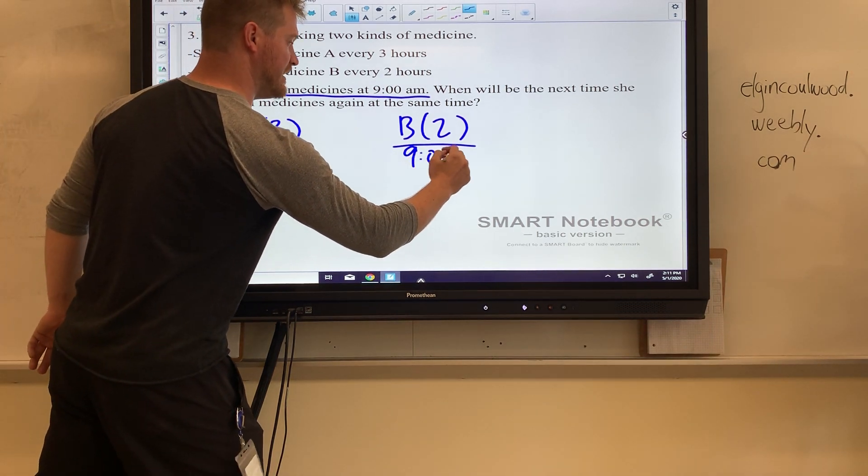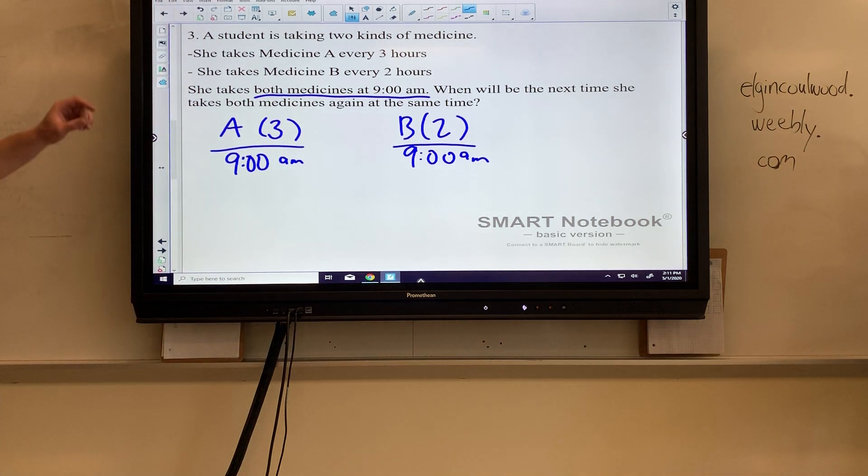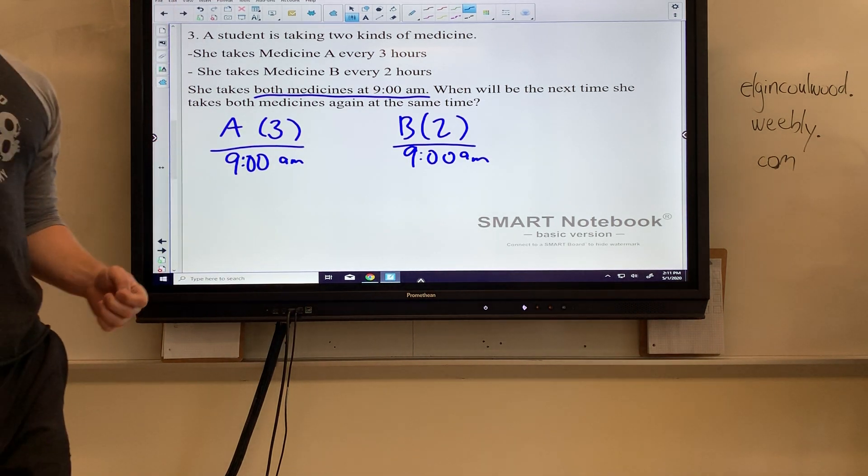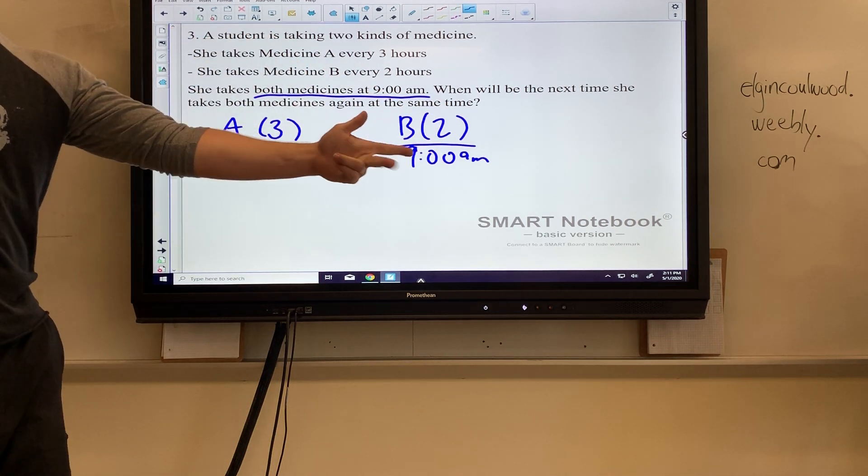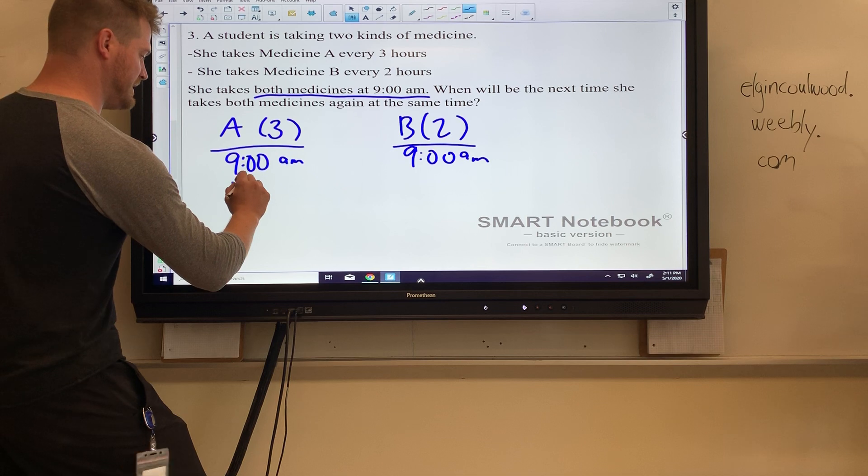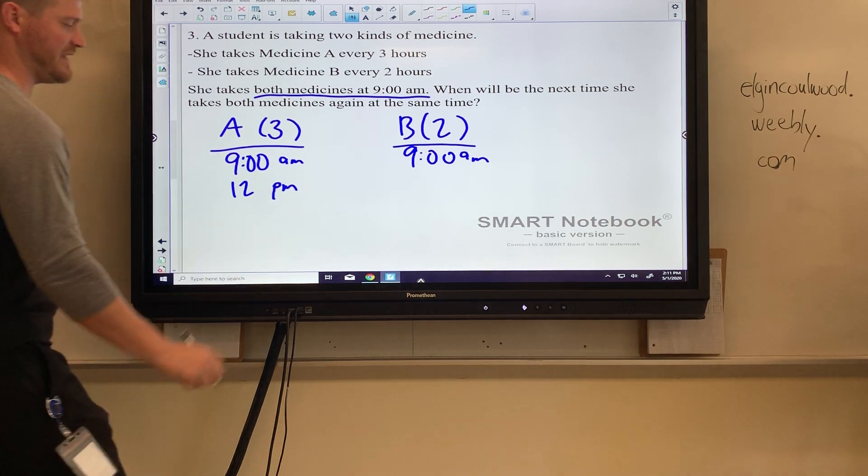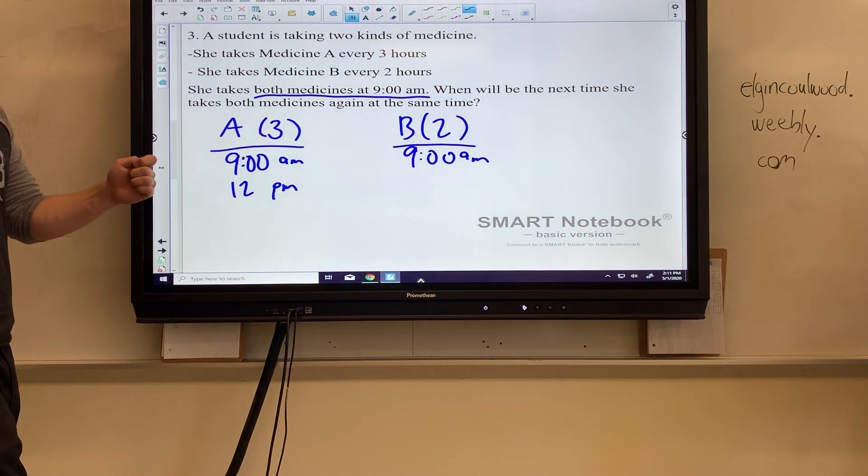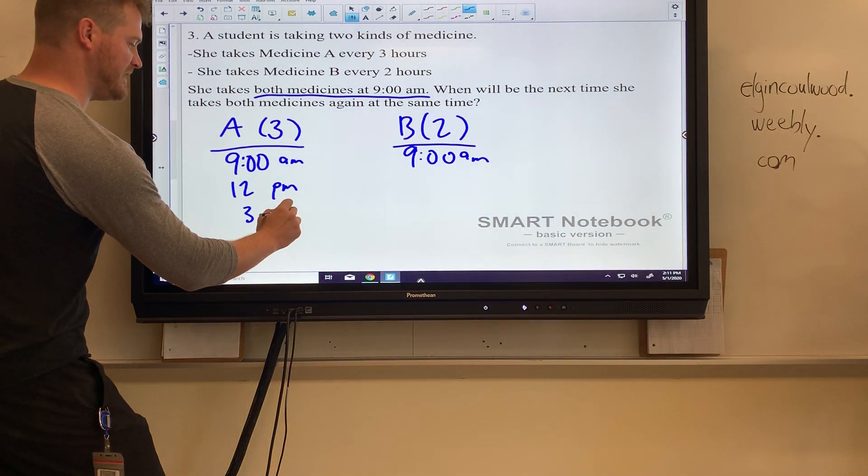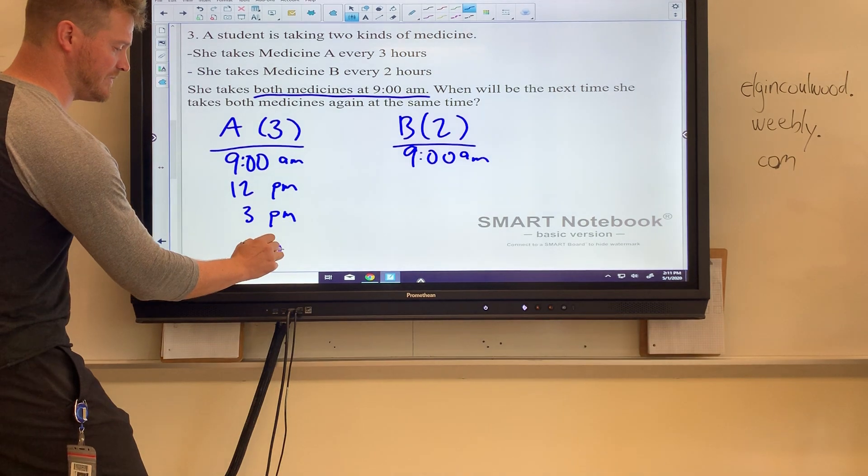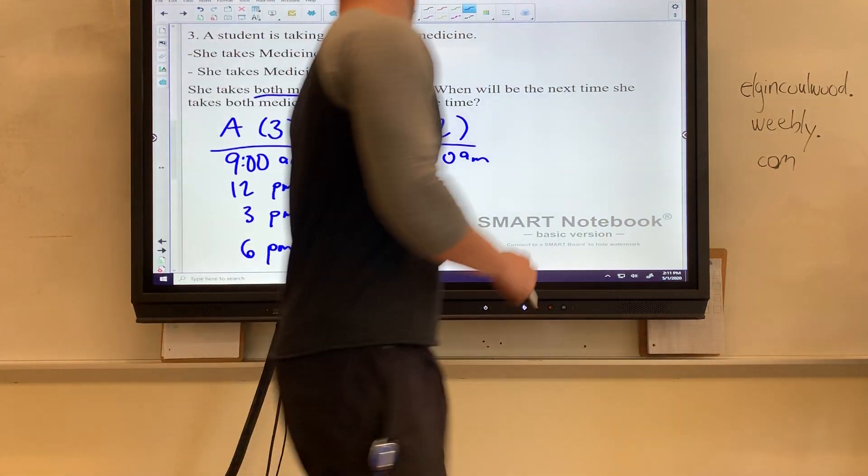Now A is every three hours, so three hours later than 9 a.m. is 9 a.m., 10 a.m., 11 a.m., 12 p.m. is noon, and then three hours after that, 12 and then it goes back to one, two, three... and four, five, six p.m. I'll stop there for now.